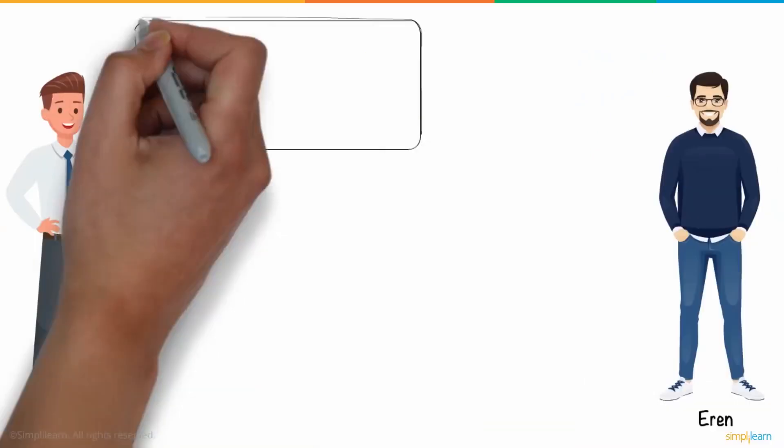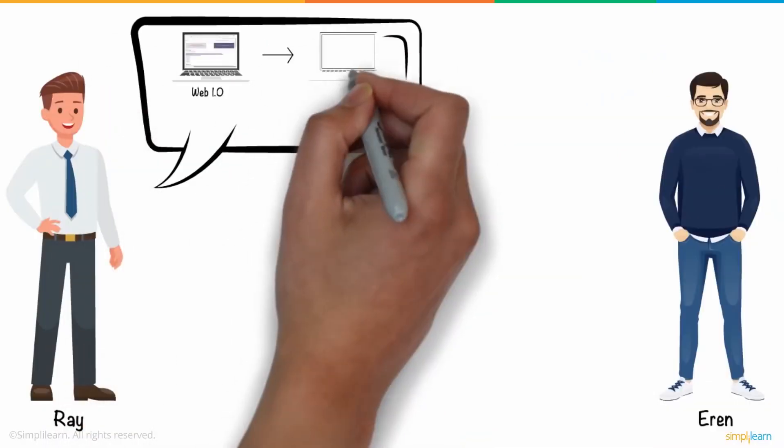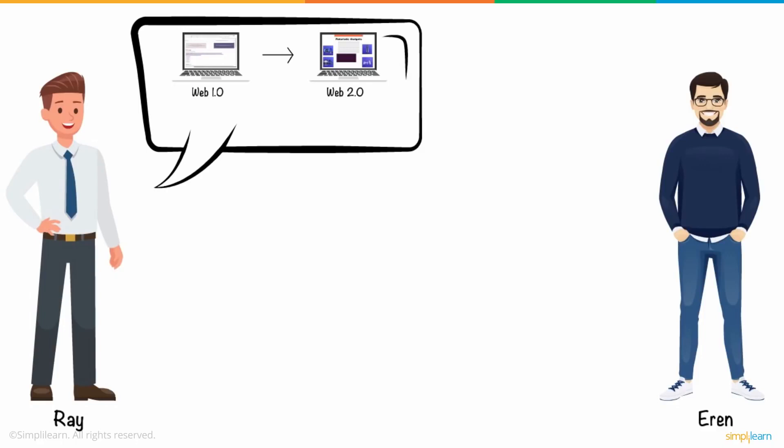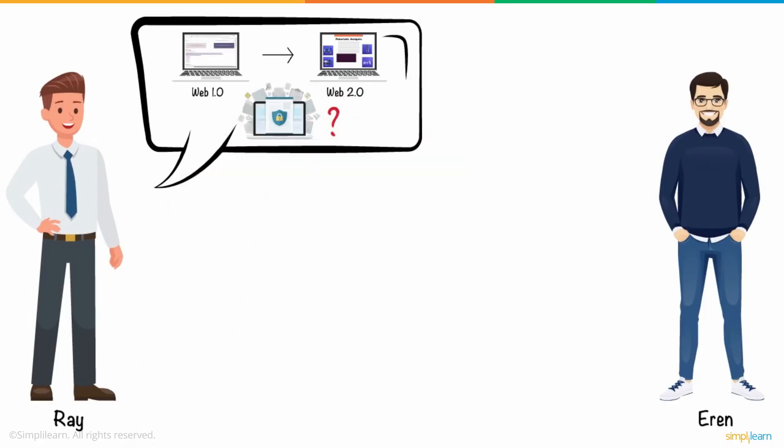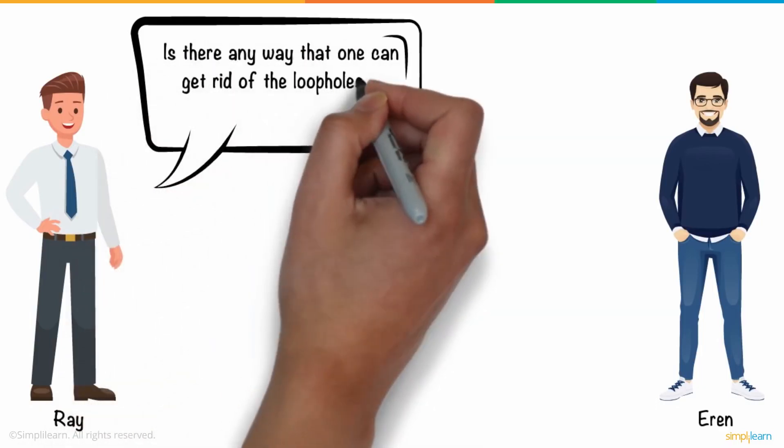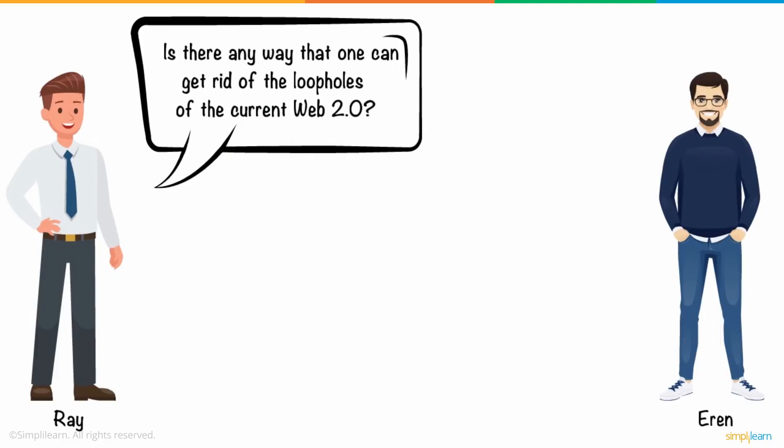Ray was fascinated by how the internet has evolved and how it works amazingly. But at the same time, he was concerned about the lack of privacy offered by it. Ray, out of his concern, asked Aaron, is there any way that one can get rid of the loopholes of the current Web 2.0?